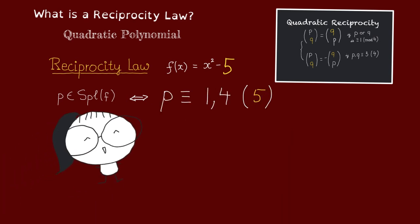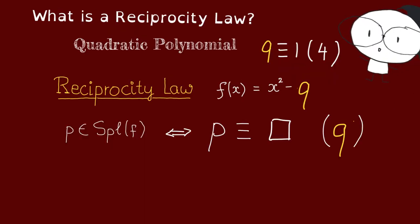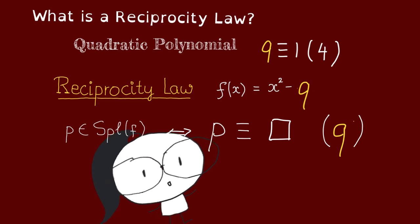Thus we see that the set split f could be given by a congruence condition modulo 5. And more generally, if q is congruent to 1 mod 4, then split f can be given by a congruence condition modulo q.